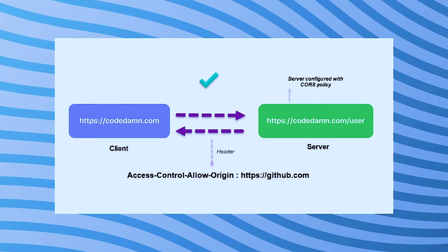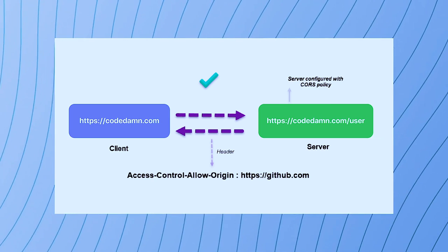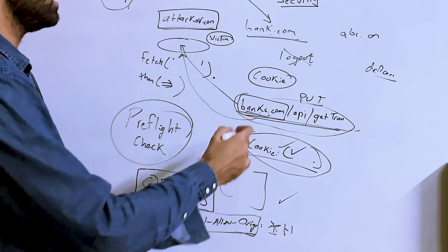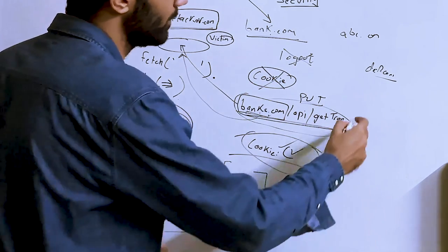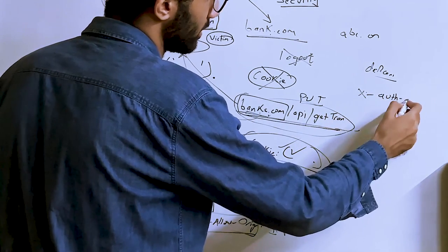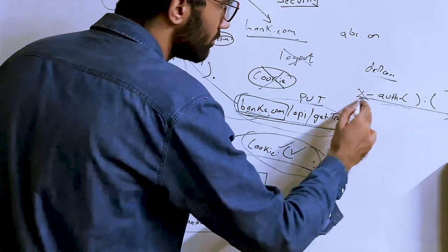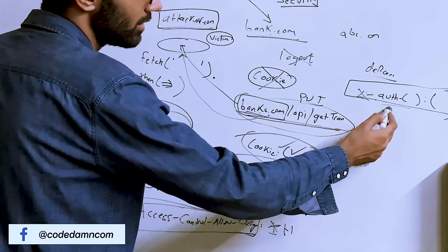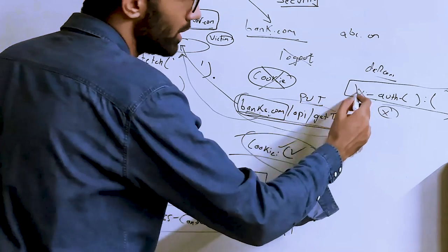This is why CORS is important. If this CORS check wasn't there, multiple domains could be talking to multiple different domains freely. If you remove cookies from the picture and manually pass something like an `x-auth` JWT token header instead, this attack vector becomes less viable because it's populated by frontend JavaScript and stored in local storage.